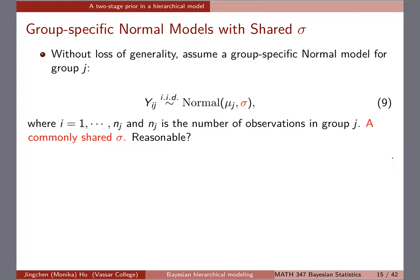Now, without loss of generality, I'm going to do a group-specific normal for group j with a shared standard deviation but different mean. I highlight sigma in red. For simplicity, I'm assuming that for each of the four normal models, I'm using the same standard deviation but a schedule-specific mean, mu_j. So, we're using a commonly shared sigma, and the rest of the lecture will be based on this particular model.